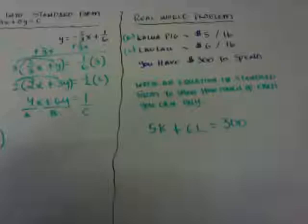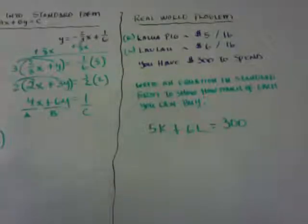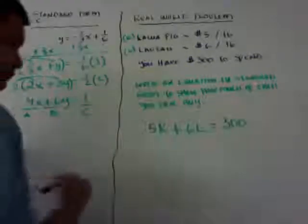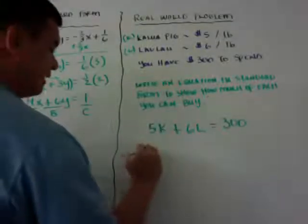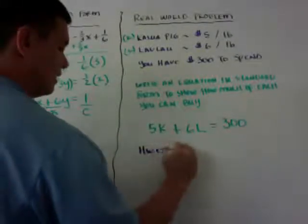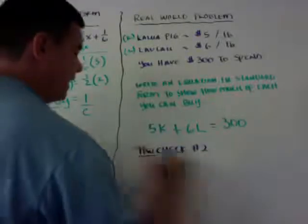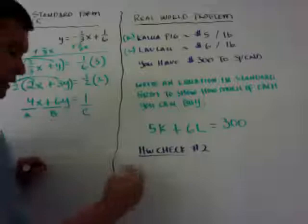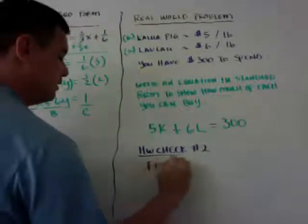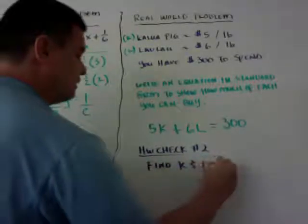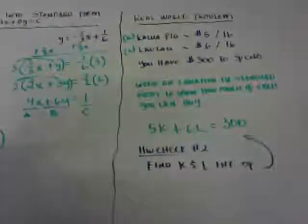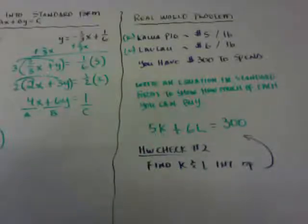Homework check number 2: find the K and L intercepts of this equation, 5K plus 6L equals 300. Should be pretty simple. I hope this helps, and I'll talk to you later.